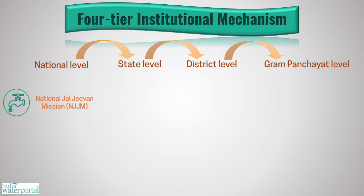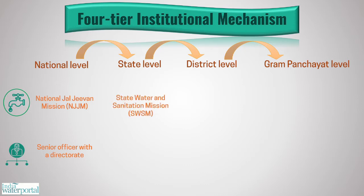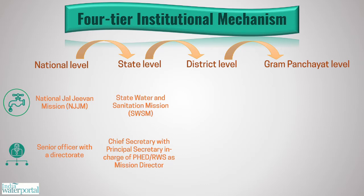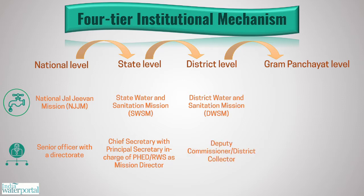The National Jal Jeevan Mission will be headed by a senior officer with a directorate. The state level is called the State Water and Sanitation Mission, headed by the Chief Secretary with the Principal Secretary in charge of Public Health Engineering Department or Rural Water Supply Department as Mission Director. The district level is called the District Water and Sanitation Mission, headed by the Deputy Commissioner or District Collector.